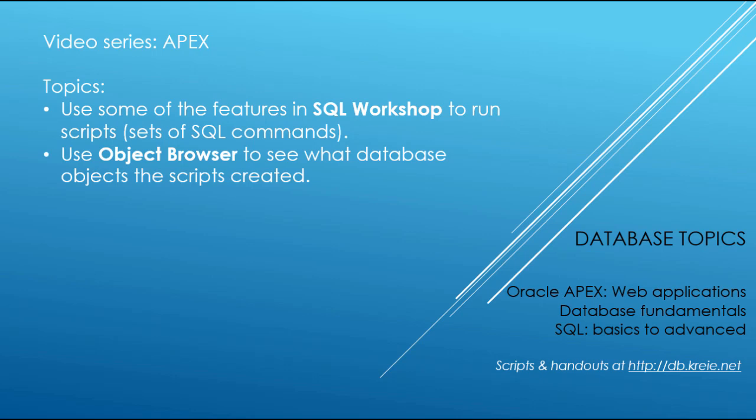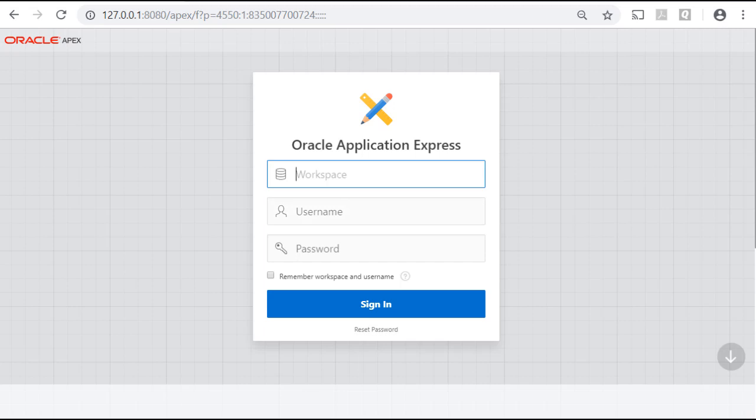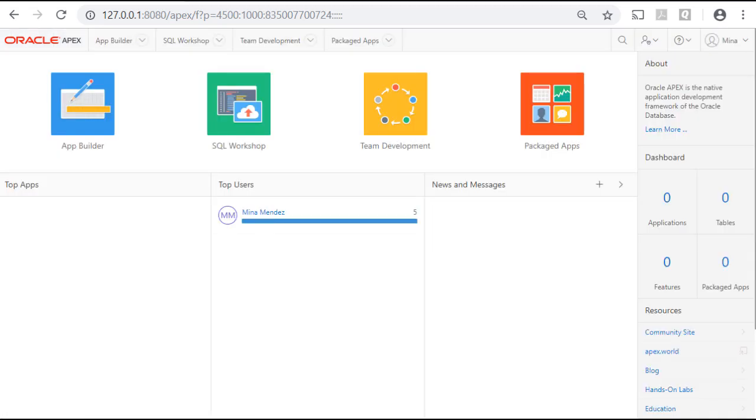So the first thing I'm going to do here is come back to our login screen and login as a developer. In my case, the workspace name is Animal Shelter, and I'm going to log in as Mina Mendez. I can see that I'm logged in as Mina, and I'm going to go to SQL Workshop.